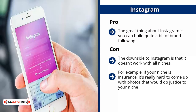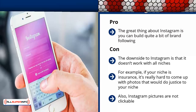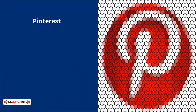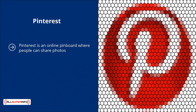Con: the downside to Instagram is that it doesn't work with all niches. For example, if your niche is insurance, it's really hard to come up with photos that do justice to your niche — people on Instagram don't really look for car accident pictures. Make sure your niche is graphics-intensive and has enough demand on Instagram for it to be worth your time. Also, Instagram pictures are not clickable — people have to go to your profile. With each photo, you can always include a call to action telling people to click your profile.